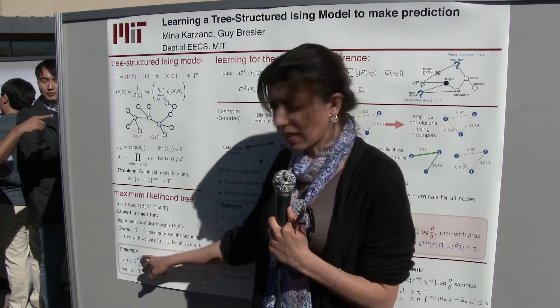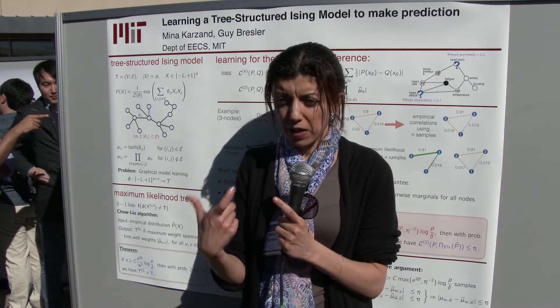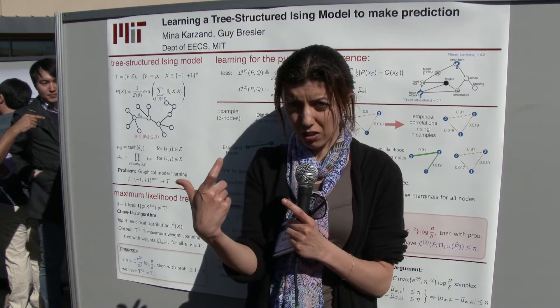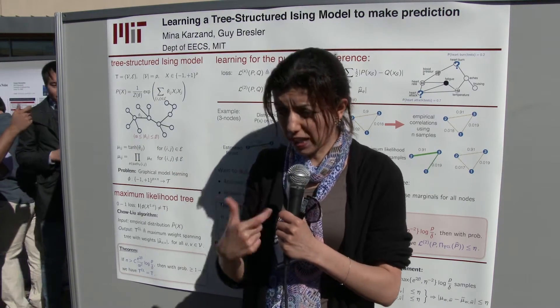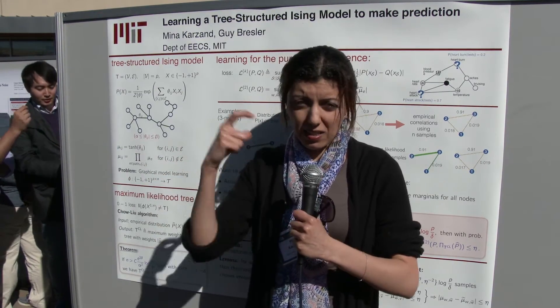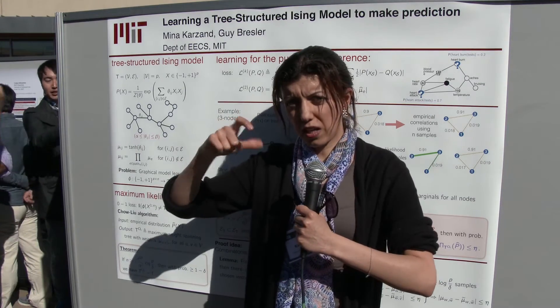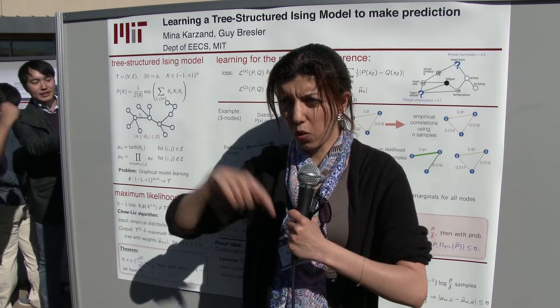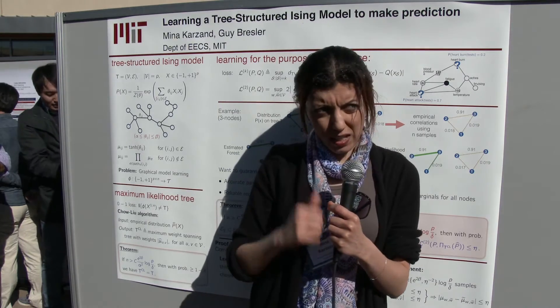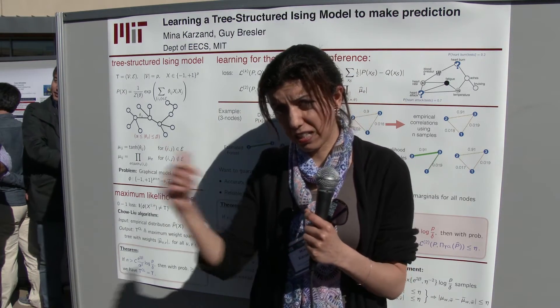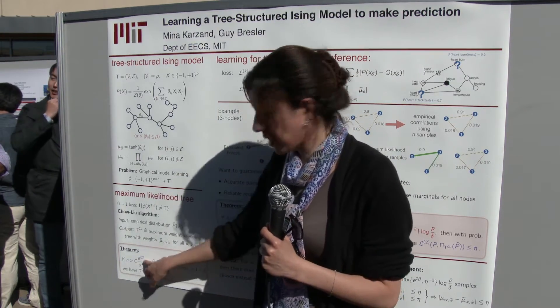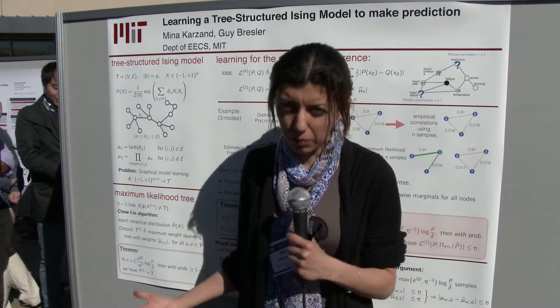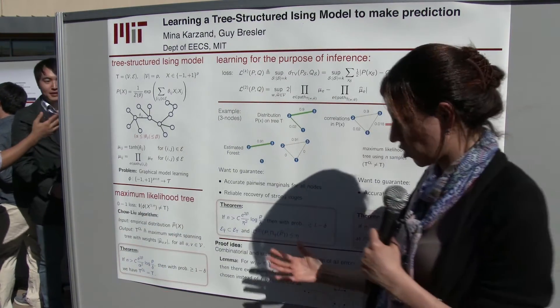To understand the dependence on beta, we should look at three nodes. If I have two nodes that are very strongly correlated, and I have another node that's correlated with one of them, the extreme case is that these two nodes are exactly equal to each other. So I need infinite number of samples to recognize where this other node is connected to. That's why as beta is going to infinity, I need infinite number of samples to recover the structure reliably.